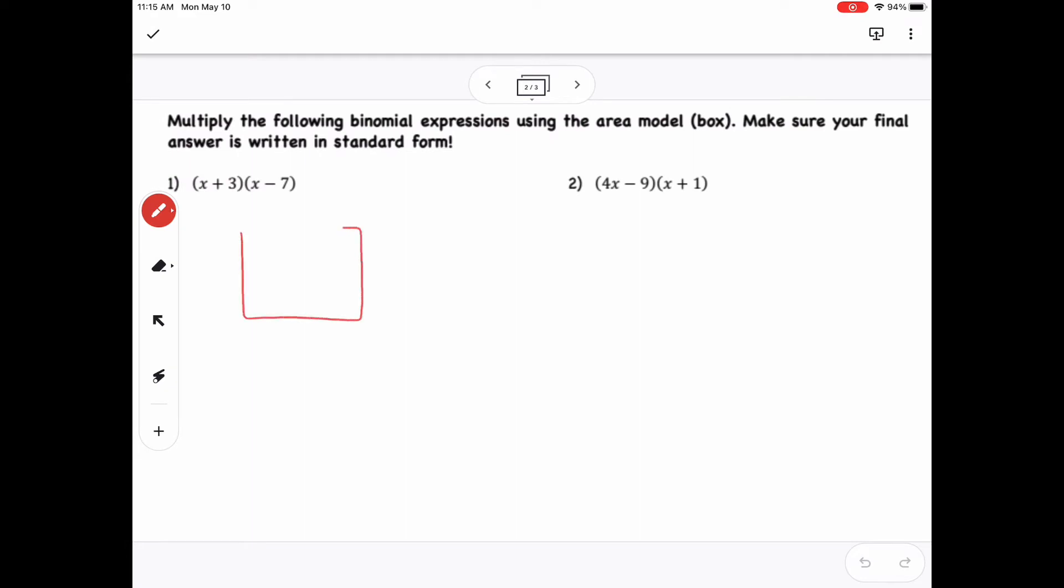So here for number 1, I have x plus 3 times x minus 7. I'm going to use my area model box that we used before, and do it in reverse of what we did in the last one where we were factoring. So in this first box, where the x and the x meet up, I'm multiplying those to get x squared. And then the 3 and the x meet up and they're multiplying to get 3x. x and negative 7 meet up to get negative 7x.